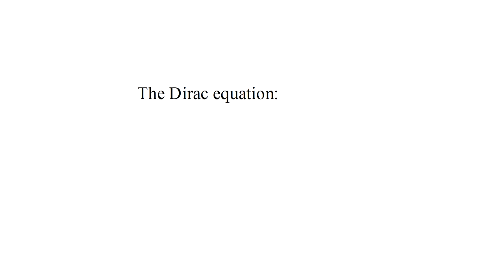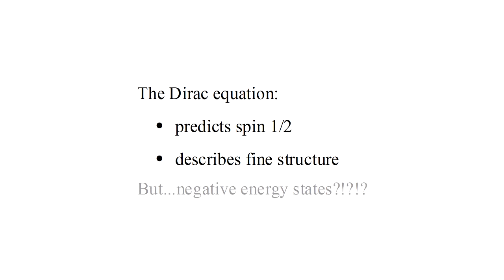So, the Dirac equation predicts the spin one-half properties of electrons, and accurately describes the fine structure of hydrogen. These are monumental accomplishments that strongly suggest the Dirac equation is on the proverbial right track. But, there are those negative energy states. These are a deal-breaker, a show-stopper. They not only seem non-physical, they lead to impossible predictions.